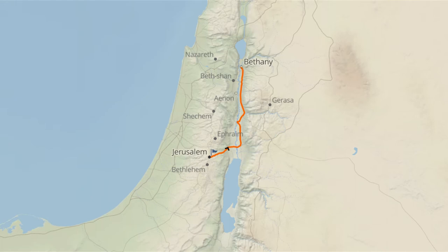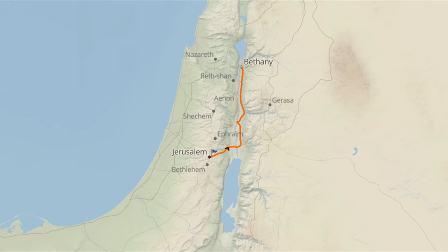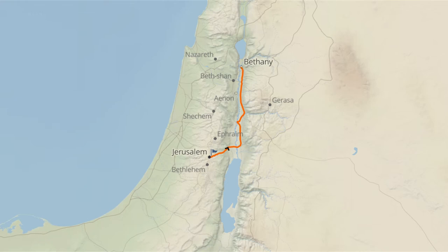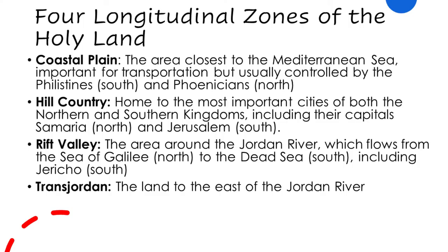Continuing east, after the coastal plain and the hill country, we have the rift valley. This is where there is a precipitous drop in elevation. The Jordan River is below sea level, and it flows from the Sea of Galilee — which is also below sea level — south to the Dead Sea, which is the lowest place on planet Earth. And then to the far east is the Transjordan, the land across the Jordan River. It starts low-lying, but as it picks up elevation and moves further east, it becomes desert and thus uninhabitable — because if you can't eat, you can't live there.